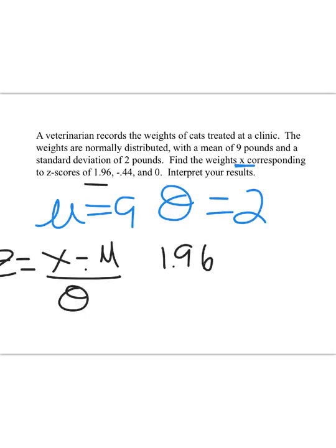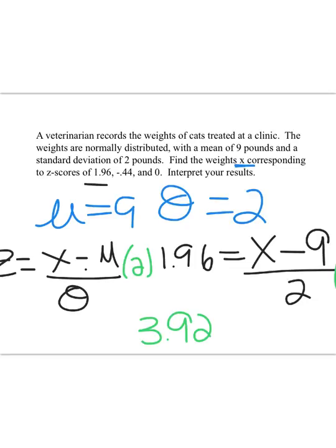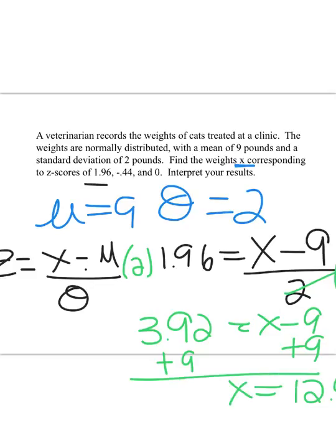The z-score is 1.96, and that's going to equal x, which we don't know, minus the mean of 9 divided by 2. Hopefully your algebraic brains are kicking in. I'm going to multiply both sides by 2, so 1.96 times 2 equals 3.92 equals x minus 9. I'm going to add 9, and I'm going to say that this cat weighs 12.92 pounds. Let's think about this. The average cat weighs 9 pounds. We had a z-score that was 1.96, so that's still usual, but we're almost in the unusual territory. So we've got a fat little kitty.